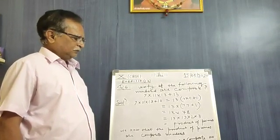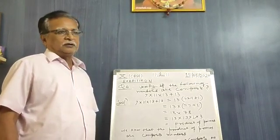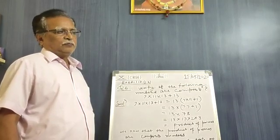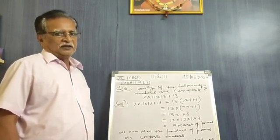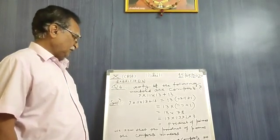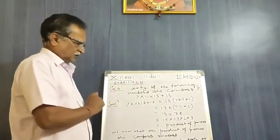we have to show that the product of primes are always composite numbers. Or, if the number has more than two factors, then the number is composite. The example is 7×11×13 + 13.